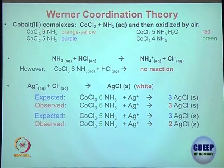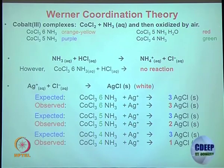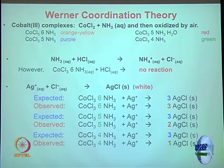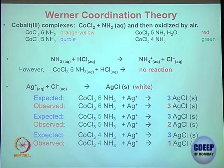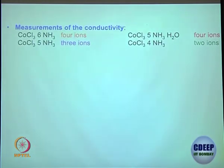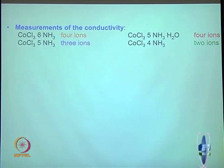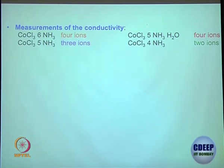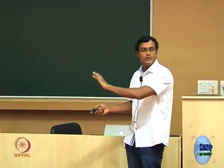So between the first and second compound there is already some discrimination — three chlorides accessible versus only two accessible. Continuing for other compounds, for the next one only one equivalent of silver chloride is obtained. For the first compound three, then two, then one, and so on. They also did conductivity measurements, which tell you how many ions are present. For the first case they found four ions, then three ions, then four ions, then two ions — so the number of ions in the colored species can be counted.